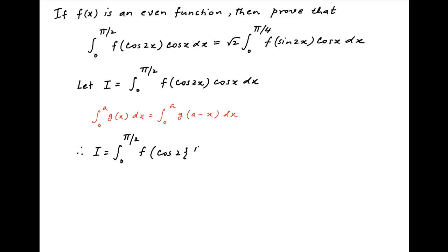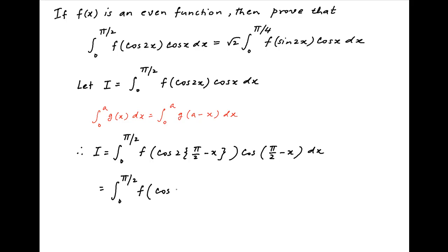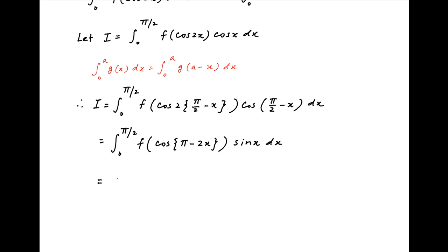Therefore we get f of cos of 2 times (pi upon 2 minus x) times cos of (pi upon 2 minus x) dx. Cos of (pi upon 2 minus x) is equal to sin x. Therefore I is equal to integral 0 to pi upon 2 of f(cos(pi minus 2x)) times sin(x) dx. Now cos(pi minus 2x) is equal to minus cos 2x, and therefore I equals integral 0 to pi upon 2 of f(minus cos 2x) times sin(x) dx.